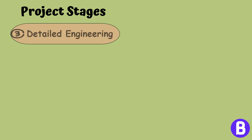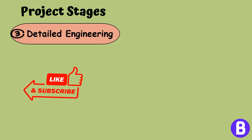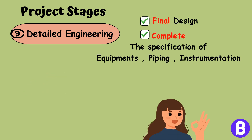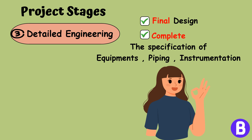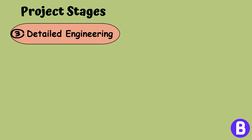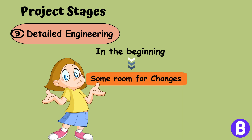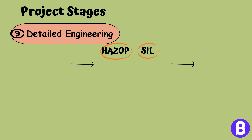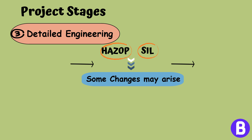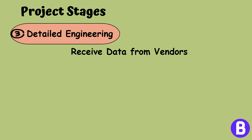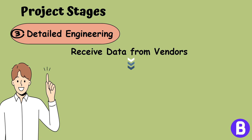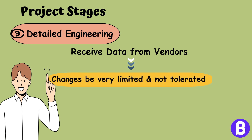The third stage is the detailed engineering stage, which is a critical phase where the final design and specification of all equipment, piping, and instrumentation are completed. Detailed design itself passes through different sub-stages. In its beginning, nothing has been purchased yet and there is still some room for changes. Then HAZOP and SIL sessions are conducted to challenge the design and ensure the system is well protected. Some changes may arise from the HAZOP outcome. After receiving data from vendors and incorporating it into the design, material has already been purchased, so changes shall be very limited and, in many cases, not tolerated.